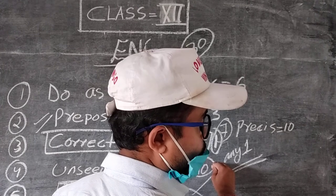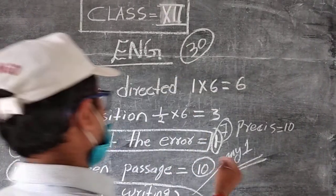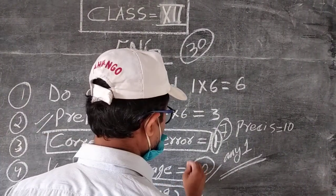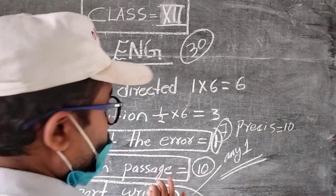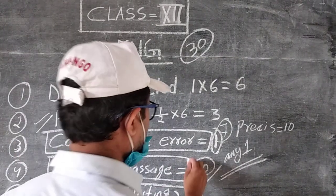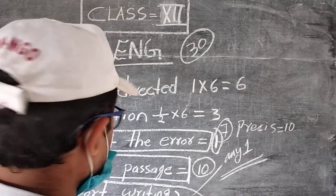Number four will be your unseen passage. They will ask you answer the following questions for six marks, and then they will ask you either true or false or fill in the blank. Unseen passage, you know how to do: first read the passage properly, take 10 to 15 minutes for reading the passage, and then just go for answer the following questions.